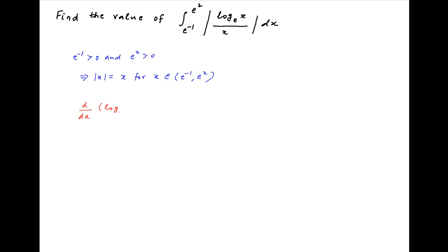Now let's focus on the numerator, modulus of ln x. The derivative of ln x with respect to x is equal to 1 upon x, which is always positive for positive values of x. This implies that ln x is a monotonically increasing function for all values of x greater than 0.